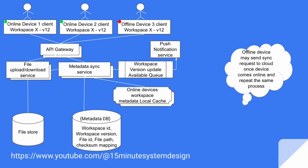There is also a case where some offline devices, which are on the same workspace, may still want to synchronize but cannot receive push notifications. All these offline devices may send a sync request to the cloud once they come online, and they can follow the same process. That's how down sync can be completed on newly available online devices for the same workspace.